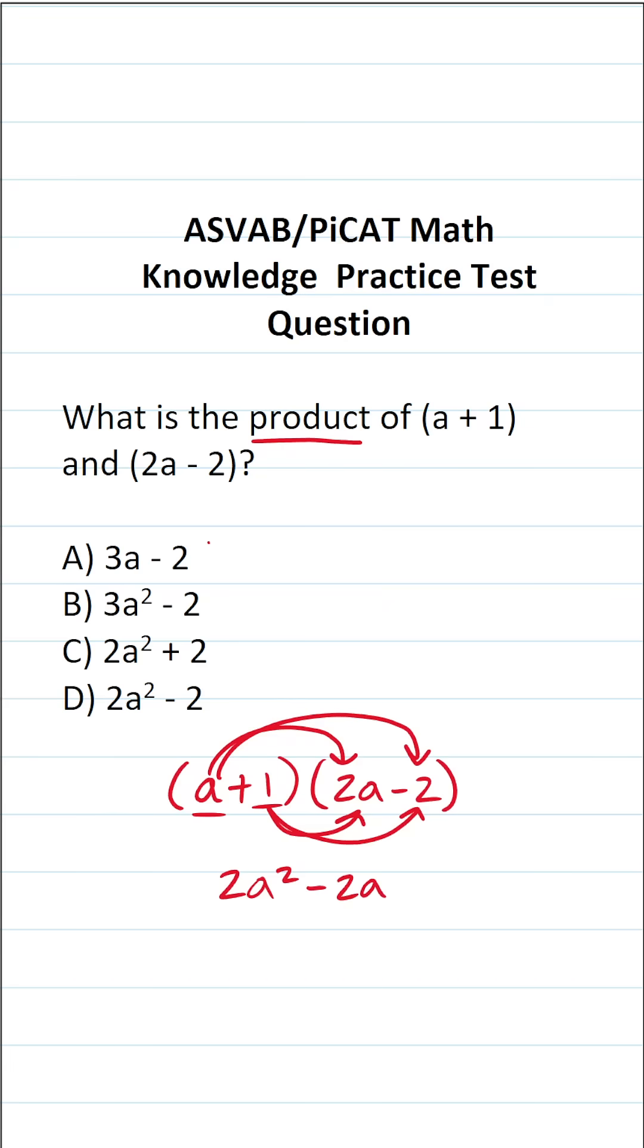What is 1 times 2A? Again, that's going to be positive 2A. And what is 1 times negative 2? Positive 1 times negative 2 is going to be negative 2. Again, a positive times a negative is a negative.